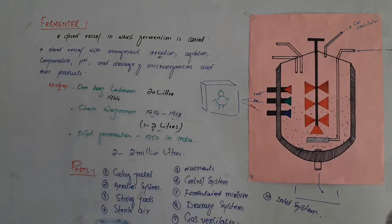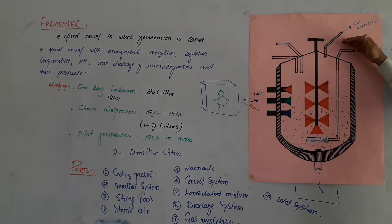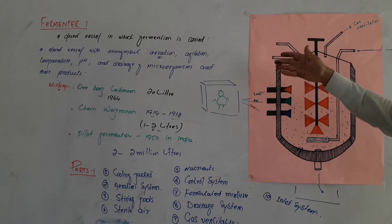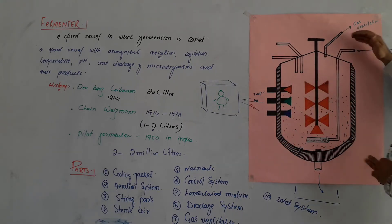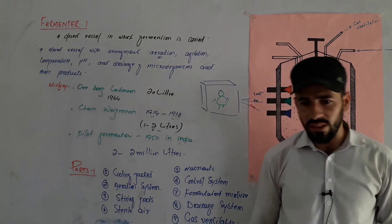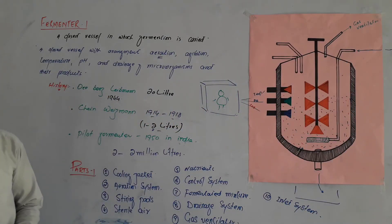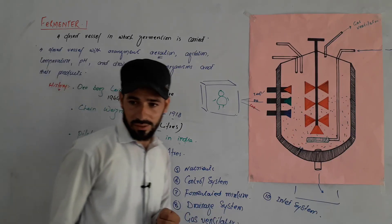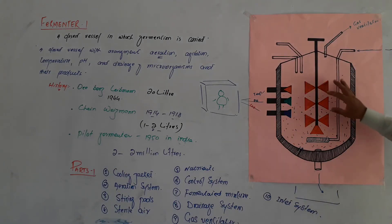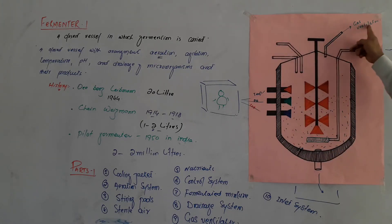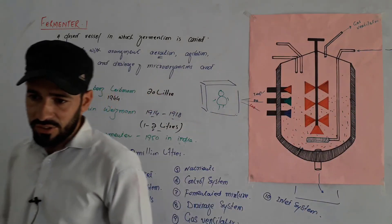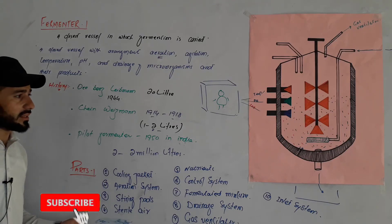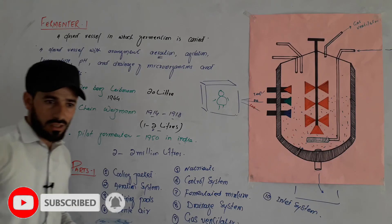So the fermenter and all its parts allow large-scale fermentation to produce many products — proteins, vaccines, drugs, and other industrial products. The parts of the fermenter include: stirring pads, cooling jacket, sensors, control system, inlet system, gas ventilator, aeration system, drainage system, and agitation system. This completes our topic on fermenters.